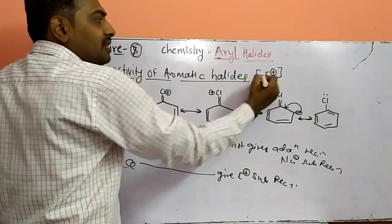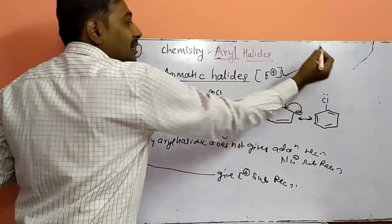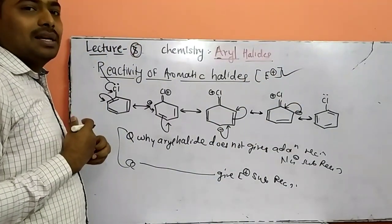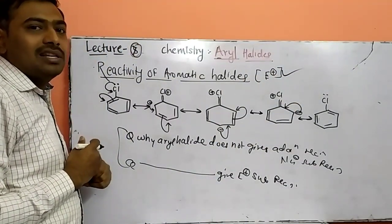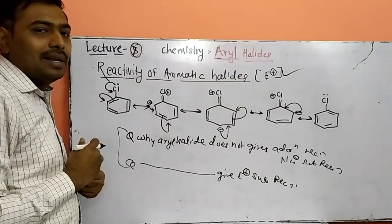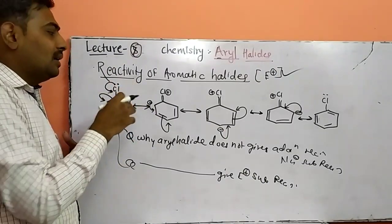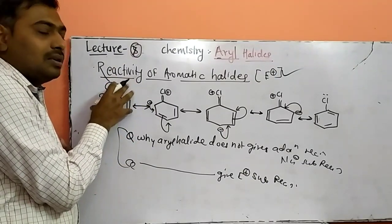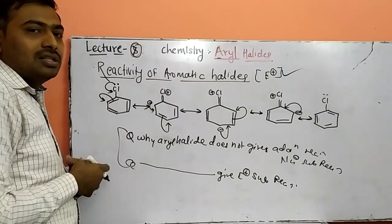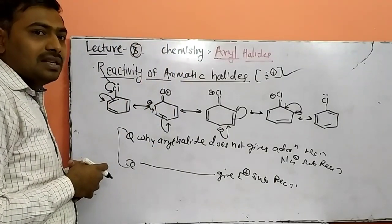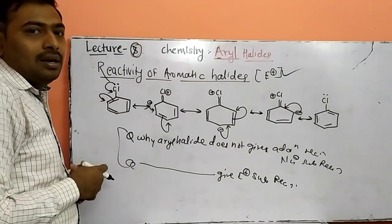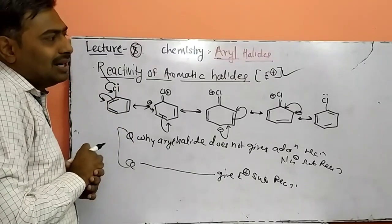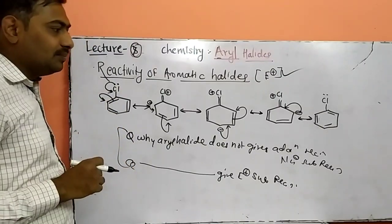Which type of reaction does it give? It gives electrophilic substitution type of reaction. In electrophilic substitution, when any electrophile attacks, a nucleophilic system can attack on another system, and a substituted product is obtained on benzene — that is electrophilic substitution type of reaction.